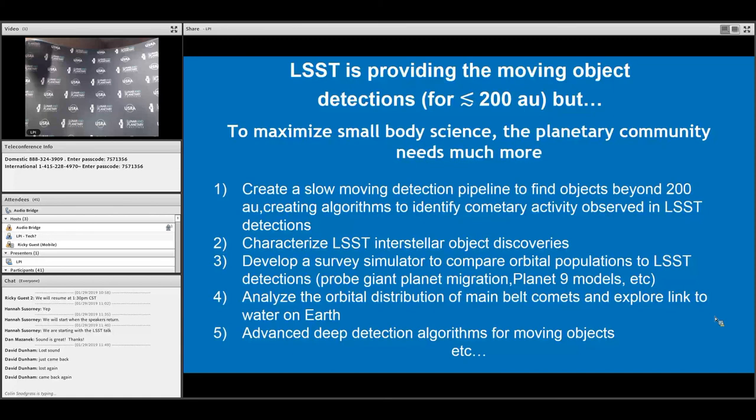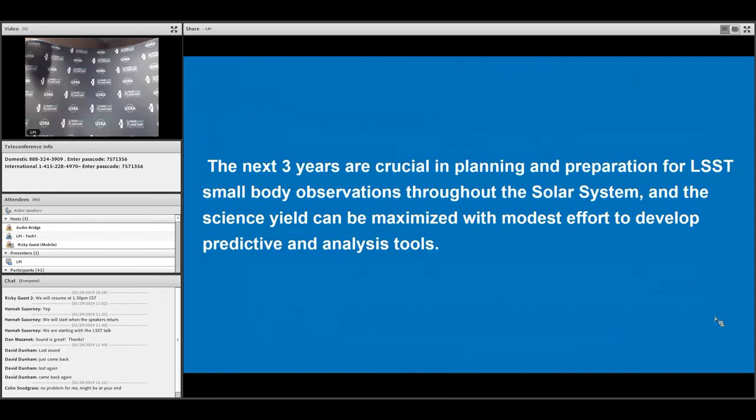To understand where water is coming from and if main belt comets played a role, you're going to want to be able to explore the links between these with debiasing theoretical populations. All of this requires effort from the community to build these things.